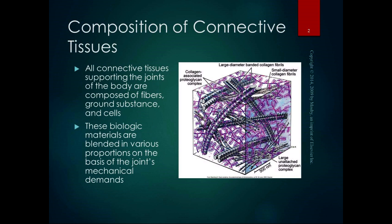Strictly speaking, bone is classified as a connective tissue, but it's special. All of our other connective tissues — fascia, tendons, ligaments, joint capsules — they are all composed of fibers, ground substance, and cells. It's the blend of those things, and the proportions of them, that determine what type of connective tissue we're talking about and how they're arranged.